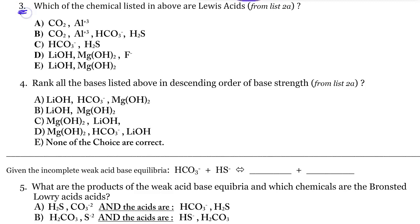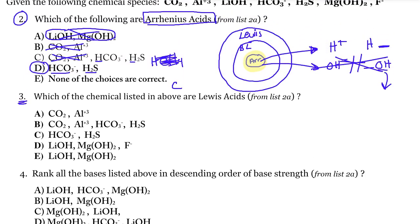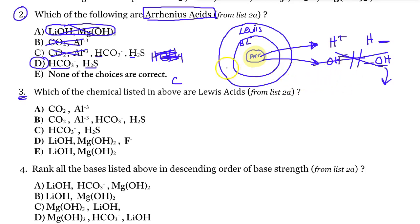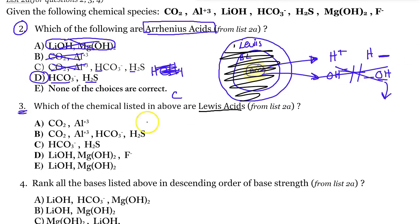Number 3, which chemical listed above are Lewis acids? Now, as I just spoke, Lewis acids are the most encompassing definition. So anything that's a Lewis acid covers all the acids, including the Arrhenius definition or the Bronsted-Lowry. And the other question, we were just asking for the Arrhenius acids. That can't be Bronsted-Lowry and Lewis because that was the limited scope definition. This one is the broad definition that covers all acids. So whatever the Lewis acid is, all the acids. So which ones are all the acids listed from 2A?